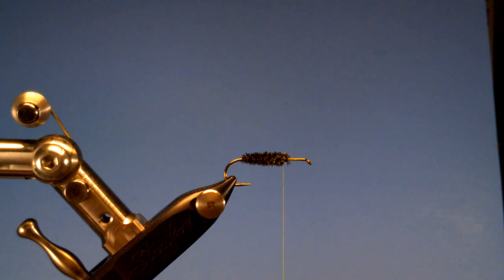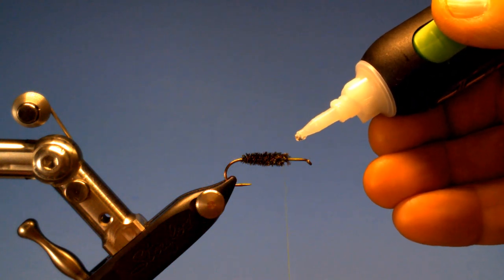And then what we're going to do is I'm going to add a little super glue on top of those threads there in front of that peacock hurl. So when I put my foam piece next, it won't twist as bad.